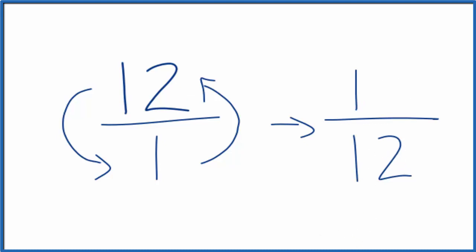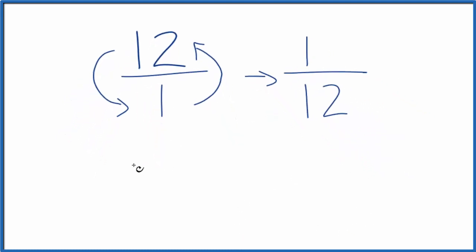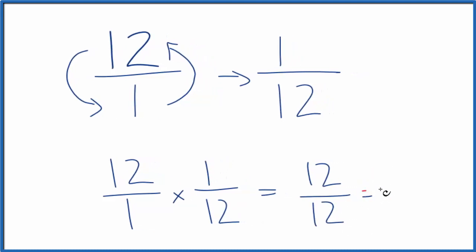We can check our work because if we take the original number, let's call it 12 over 1, and we multiply it by the reciprocal, 1 twelfth, we should get 1 if we did it correctly. 12 times 1, that's 12, over 1 times 12, that's 12. So 12 divided by 12, that equals 1.